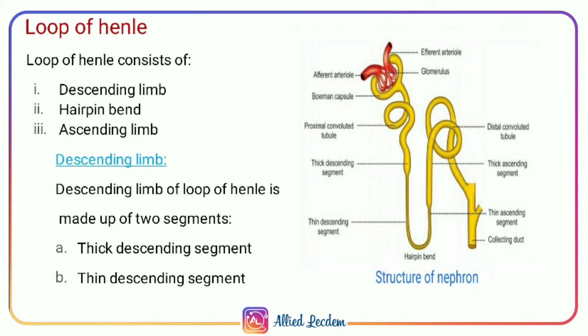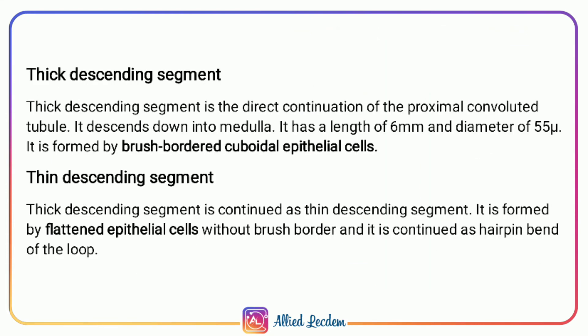The loop of Henle consists of a descending limb, a hairpin bend, and an ascending limb. The descending limb of the loop of Henle is made up of two segments: thin and thick descending segments. The direct continuation of the proximal convoluted tubule is the thick descending segment, which descends down into the medulla. Its length is 6 millimeters and diameter is 55 micrometers, formed by brush-bordered cuboidal epithelial cells.